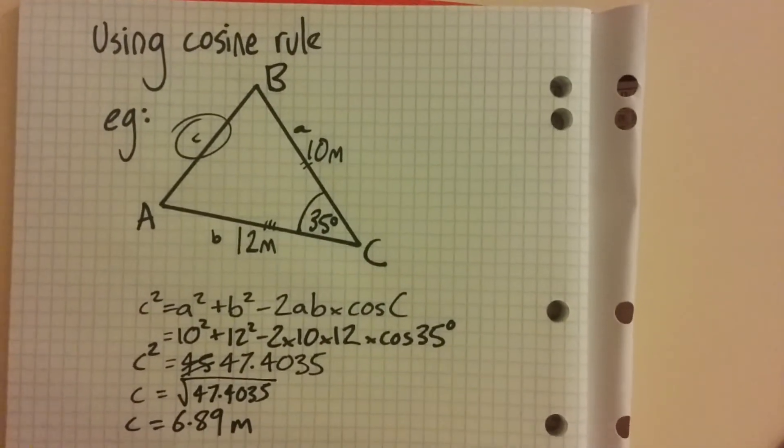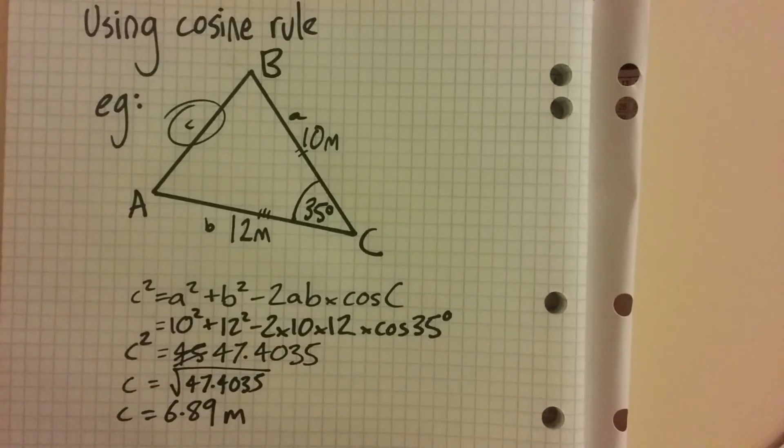That's the cosine rule used to find an unknown side.